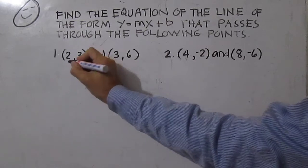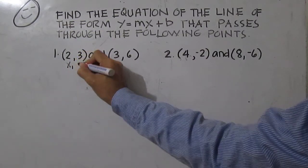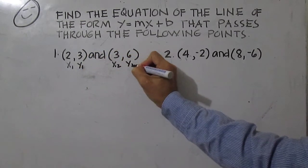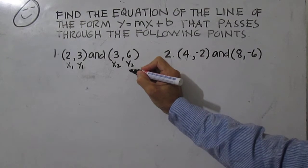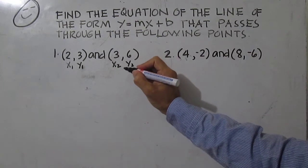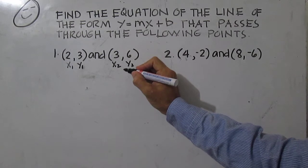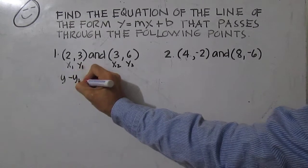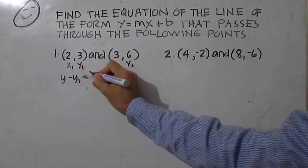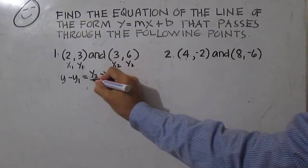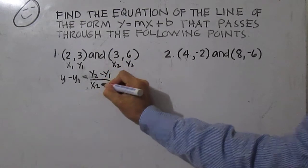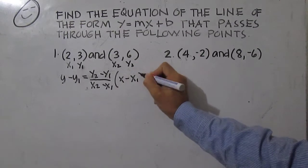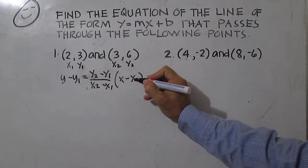Let us make this ordered pair as our point one, so this is your x sub one, y sub one, x sub two, y sub two. Then, since we're given two points, make use of the two-point form, which is: y minus y sub one equals y sub two minus y sub one over x sub two minus x sub one, times x minus x sub one.